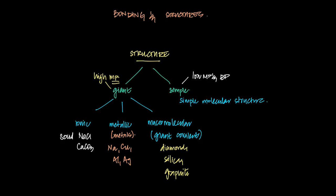They're just simple structures — simple molecular structures. Some of them don't have to have covalent bonding; those happen to be monoatomic like helium. But the rest of them — things like oxygen gas, HCl, or even glucose C6H12O6 — are considered simple molecular structures. On the other hand, polymers are considered to be macromolecular.